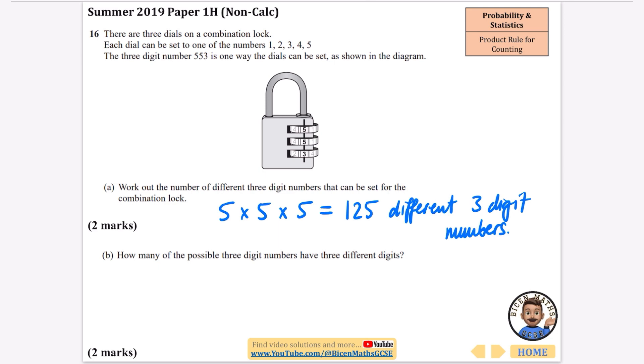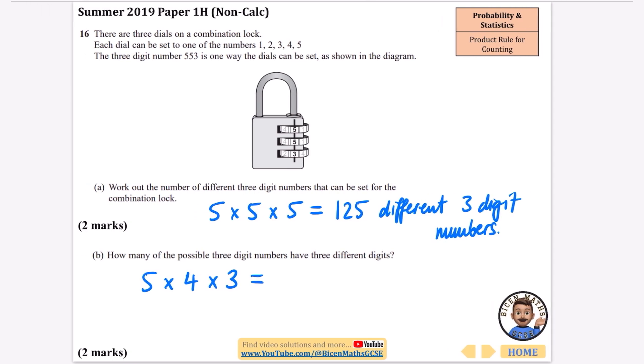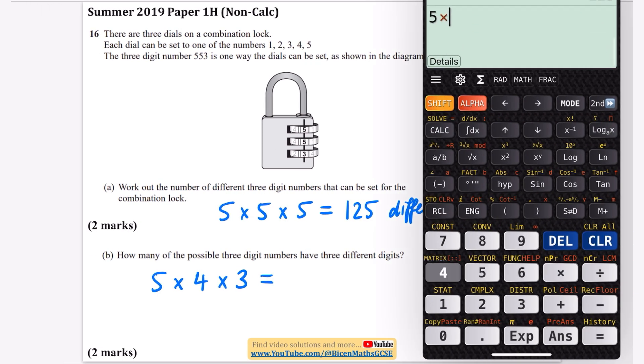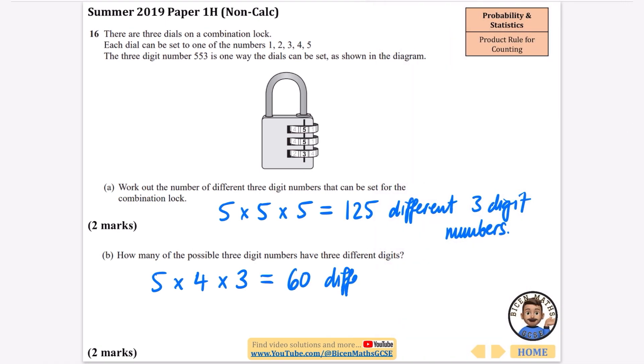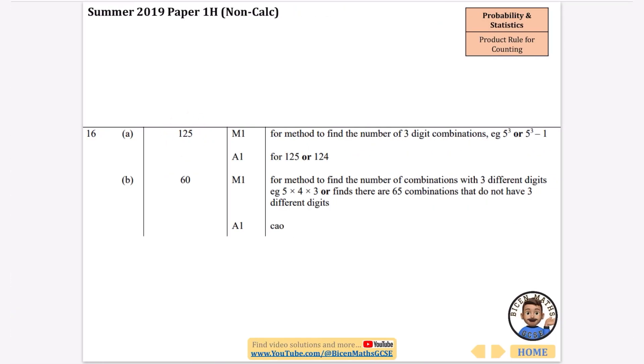Let's look at part B. It says how many of the possible three digit numbers have three different digits? Well, the first one can be any of the five numbers, but because we can't use that number again for the second one we can only choose from four, and because we've already used two, for the last one we can only choose from three numbers. So the product rule for counting is going to be a little bit different. We're going to do 5 times 4 times 3. This time we only get 60 different possible numbers. So we've got 125 and 60, and you can see the calculation that leads us there.